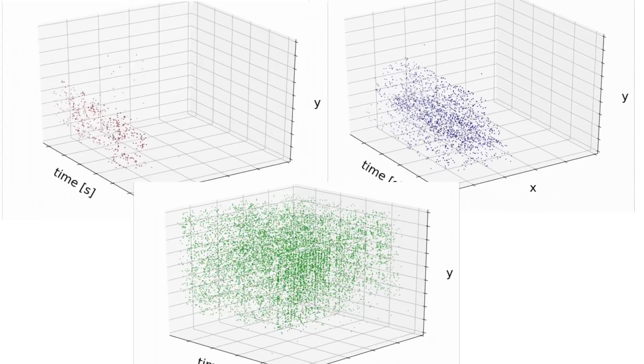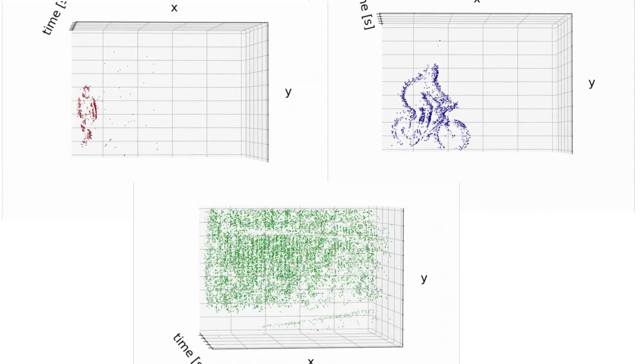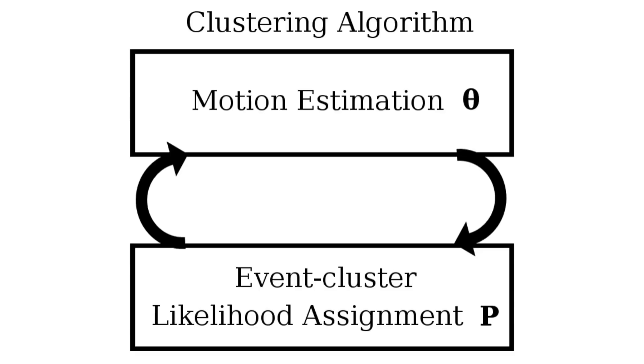Ideally, we would sharpen each object independently. But to do this, we need to know which event comes from which object, or the event likelihoods. Thus, we have a chicken and egg problem. To find likelihoods, we need motion compensation.